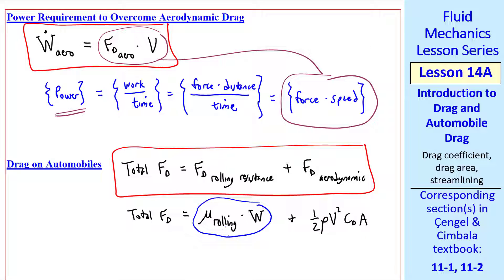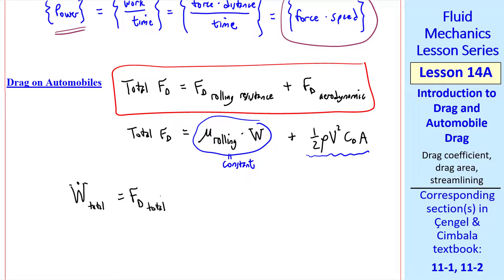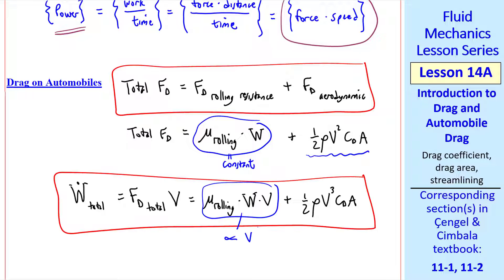This rolling resistance term is a constant independent of speed, but this term varies greatly with speed. Using this equation for power, but applying it to the total drag rather than just the aerodynamic drag, we write W dot total is F D total times speed V, equal mu rolling times W times V, plus one-half rho V cubed CdA. This first term is proportional to V, but the second term is proportional to V cubed.